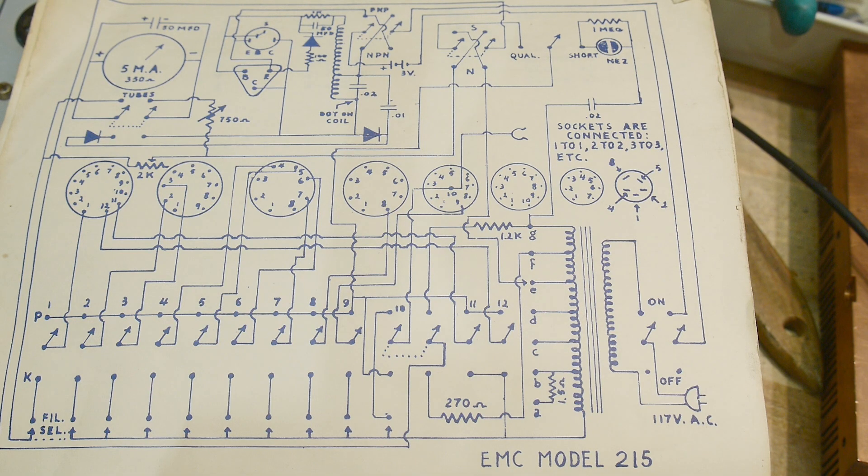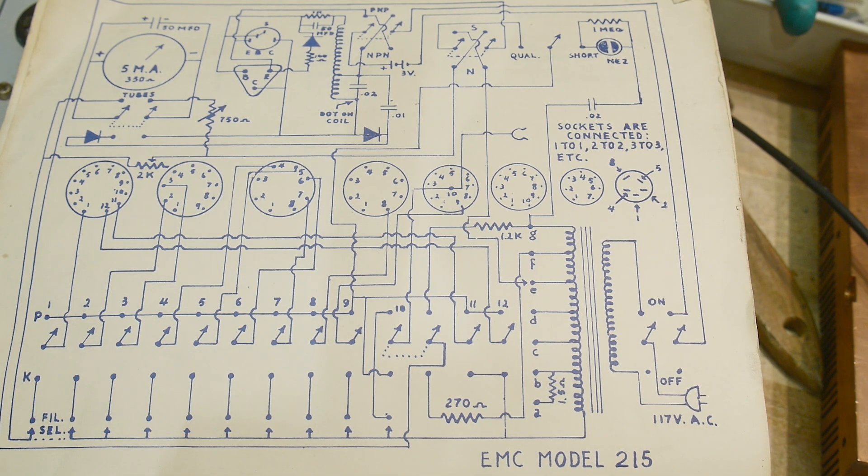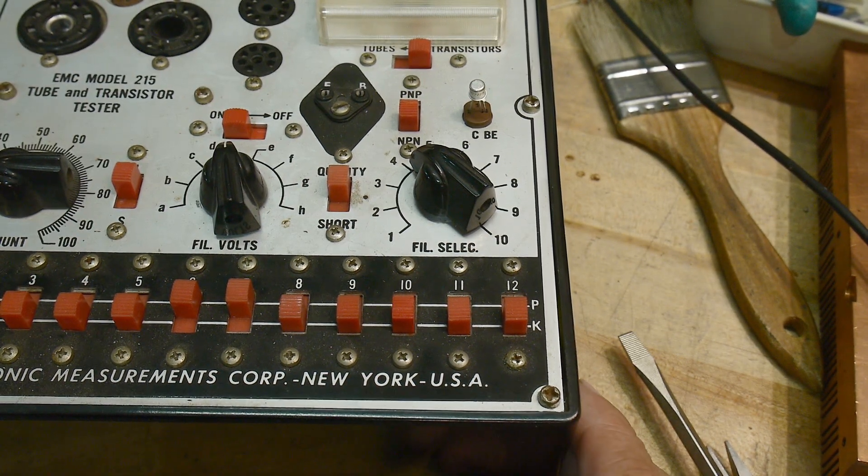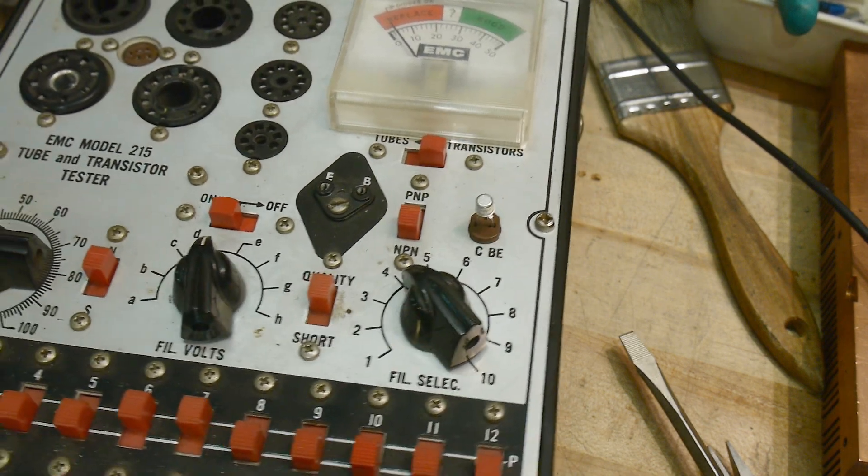So I'm assuming inside the box is a place to put in a three volt battery or probably two 1.5 volt batteries. So should we look inside? Yeah. Why don't we look inside?